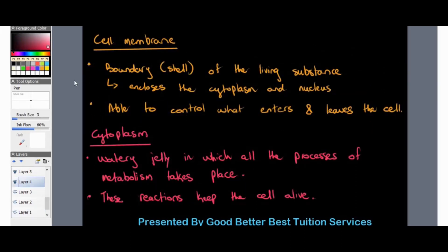Looking at cell structure, the first part we'd like to examine is the cell membrane. The cell membrane is the boundary or the shell of the living substance. It acts like a shell to protect or enclose the cytoplasm as well as the nucleus of the cell.